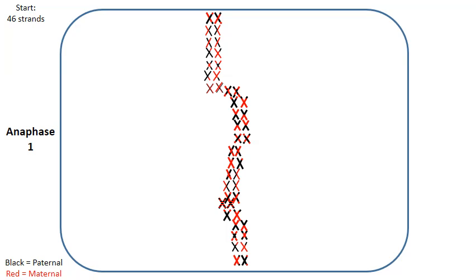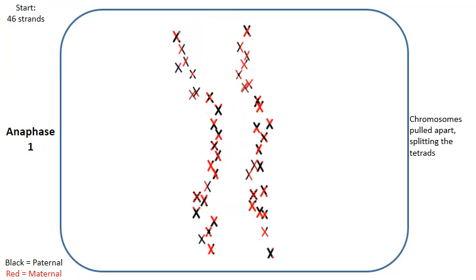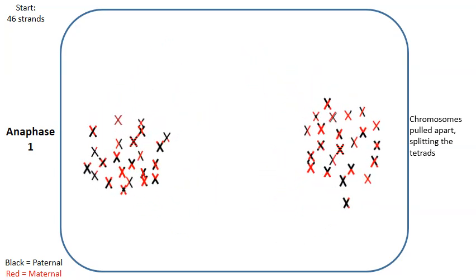Well, this takes us to anaphase number one. The spindle fibers will pull the chromosomes apart, splitting the tetrad. One chromosome of the tetrad was pulled to the left and the other chromosome of the tetrad was pulled to the right.